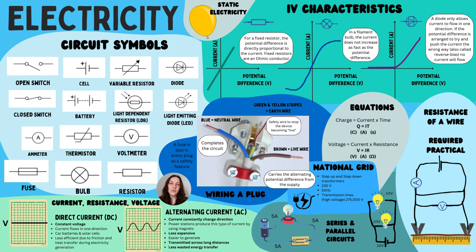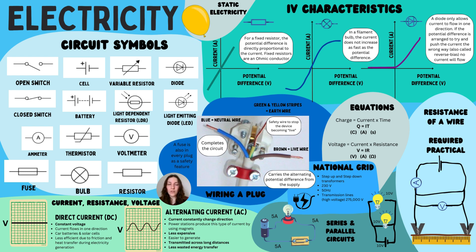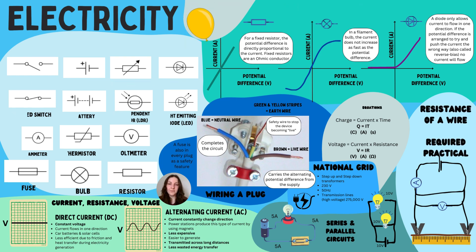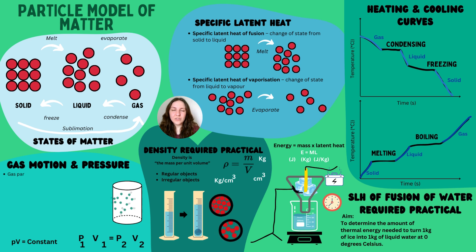You also need to know about static electricity. A material that gains electrons can become negatively charged, while a material that loses electrons is left with an equal positive charge. For example, if you rub a cloth and plastic together, electrons are transferred onto one of those objects — this is what we call static electricity.